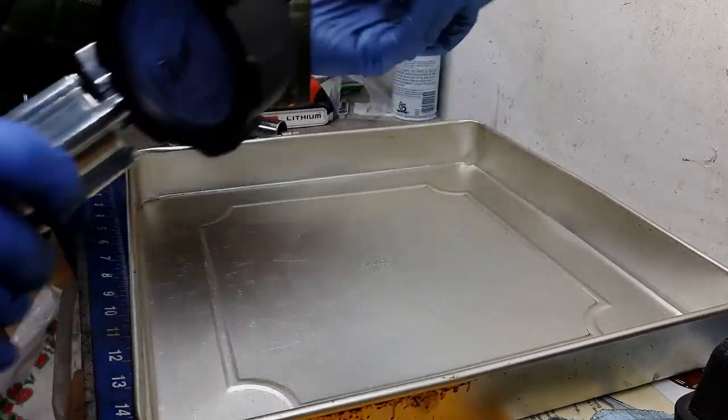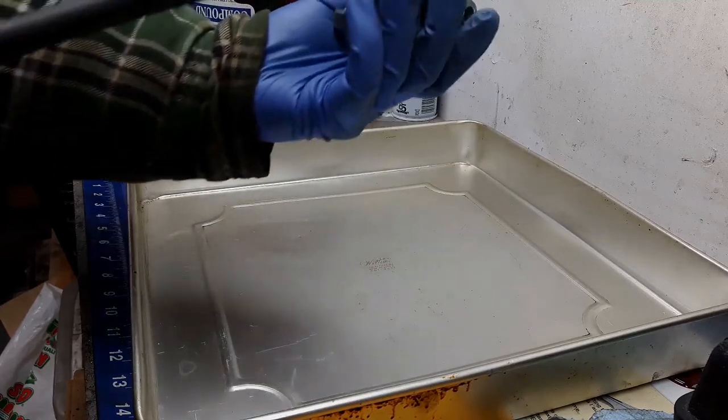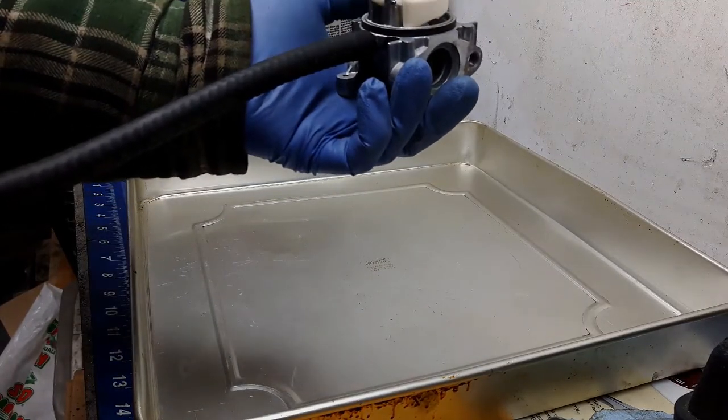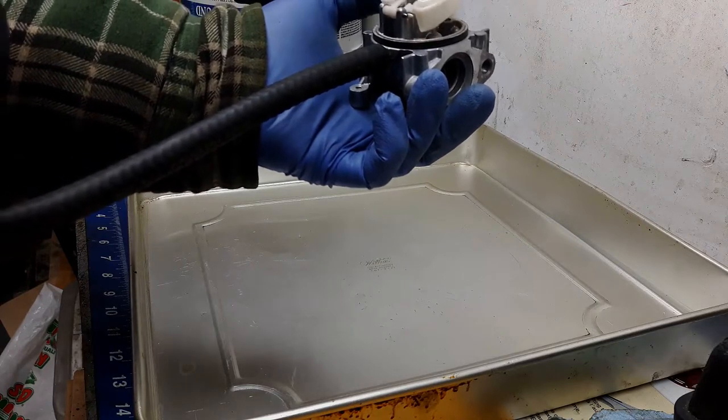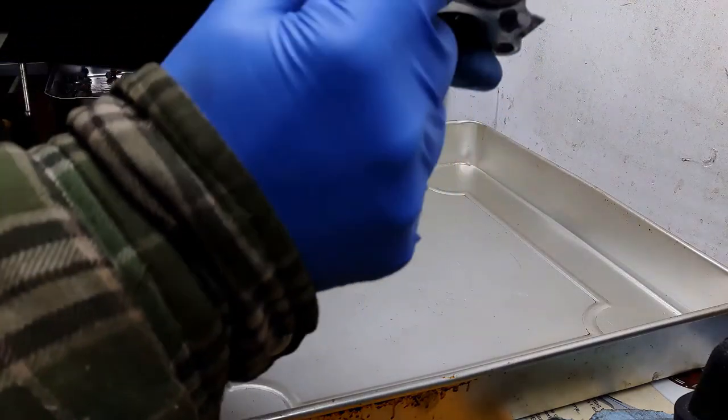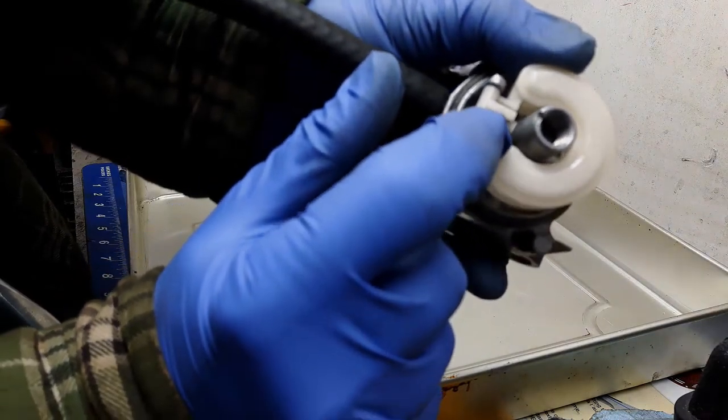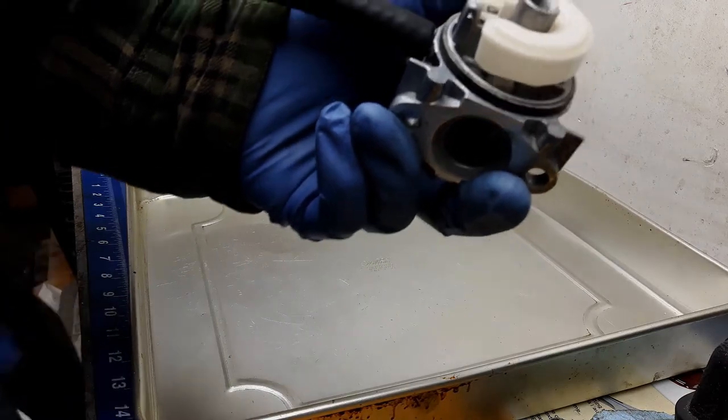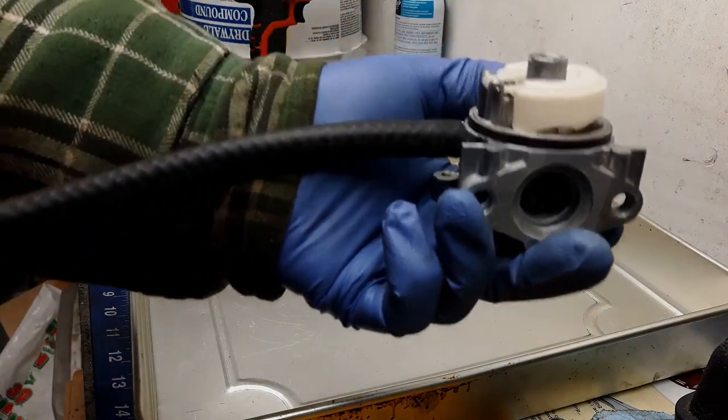Alright so what you do is you put your carburetor together and right now the carburetor is upside down so the float is actually all the way down. And what this should mean is that the needle which is attached to the float, that's your needle right here, right in there, that should be sitting properly in the rubber seat.